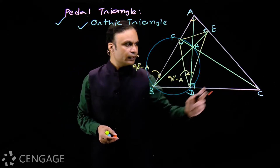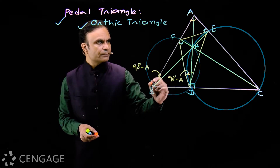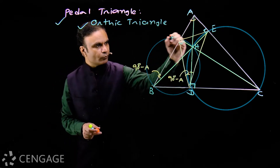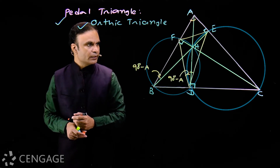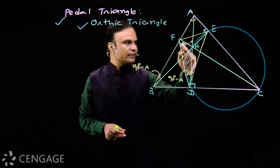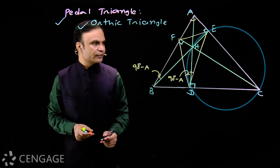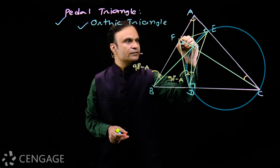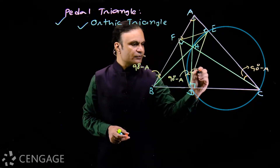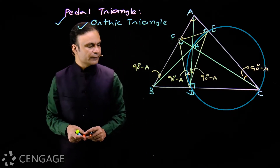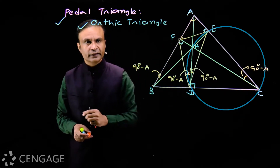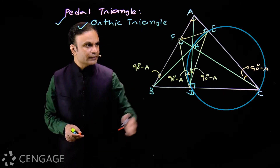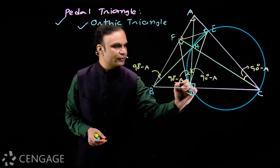Points D, H, E, C are also concyclic. For the set B, F, H, D: BH is the diameter because BH subtends right angles at points F and D. Similarly, for points D, H, E, C, HC is the diameter. So this angle equals 90° − A, just as from triangle AFC this angle is 90° − A. This means the altitude from vertex A is actually the internal angle bisector of angle D in triangle DEF, since these two angles are equal.